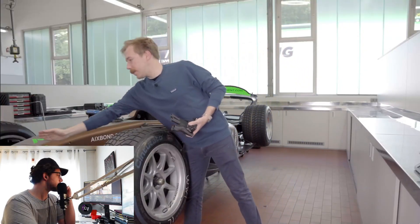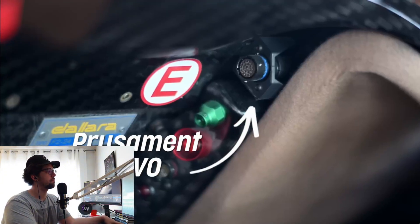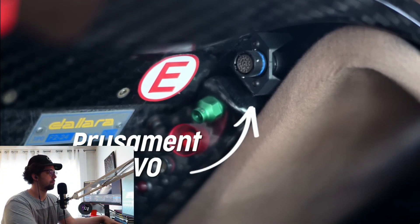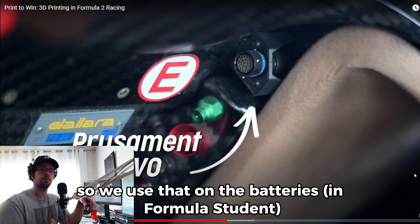All that goes from this part to this part is a safety cell. So it's where the driver is sitting in, and we are mandated to use self-instigation material. This type of material needs to be flame retardant, so we use that on the batteries.